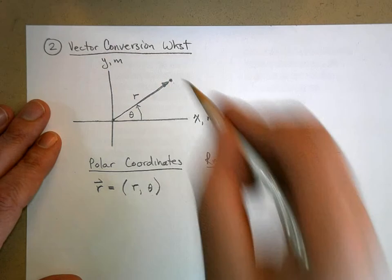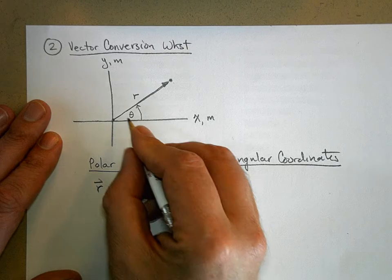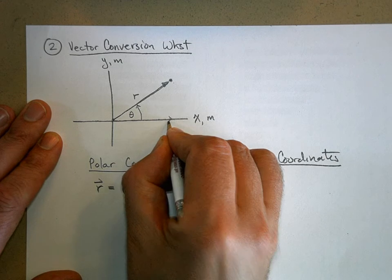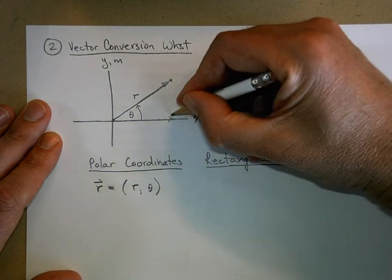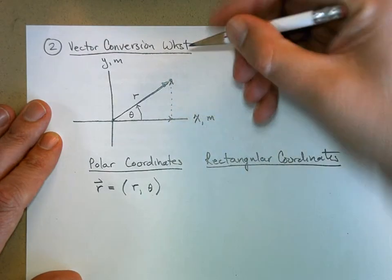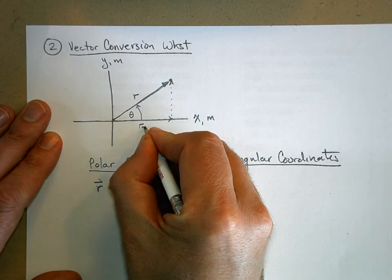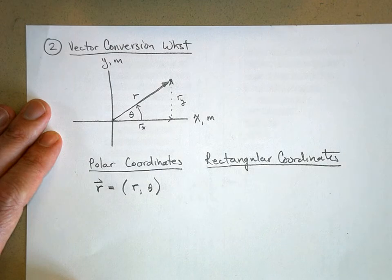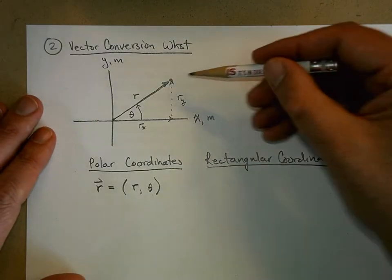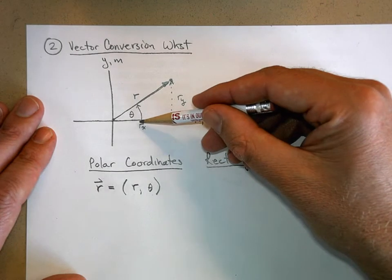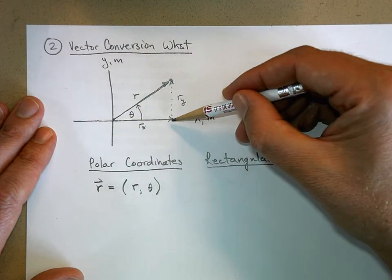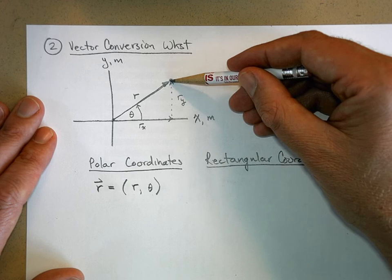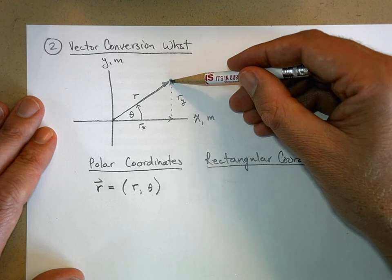Now, notice though, that I can also tell you where is this object along the x-axis, and where is this object along the y-axis. So r sub x and r sub y. Now, if you express the position of this object using how far along you are in the x direction, and how far up or down you are in the y direction, these are rectangular coordinates.